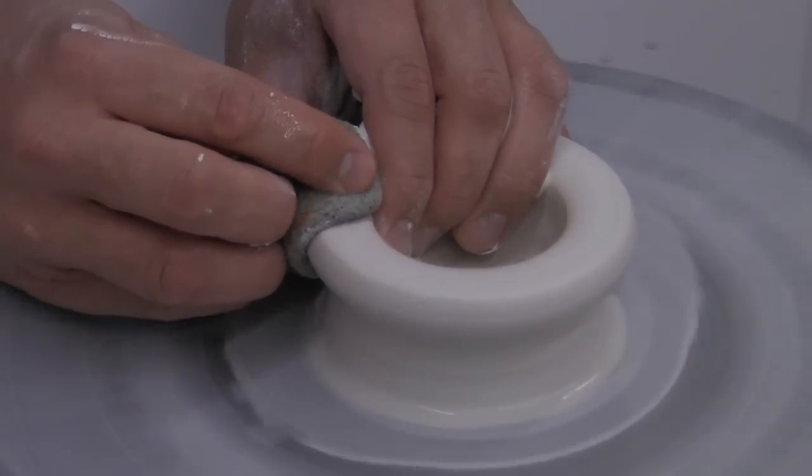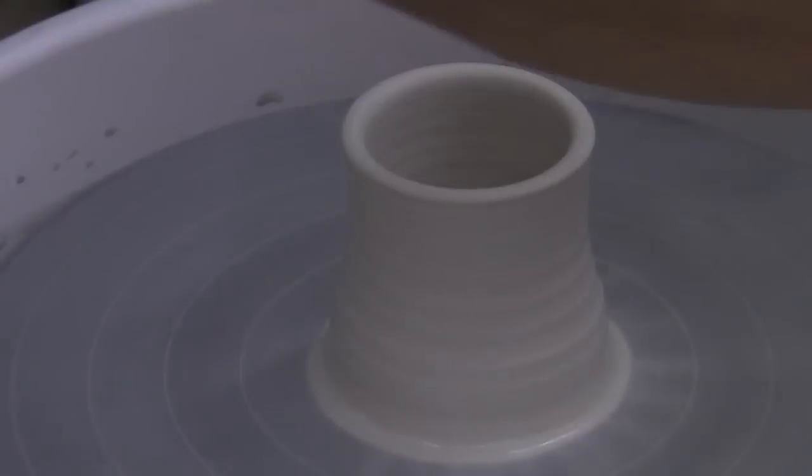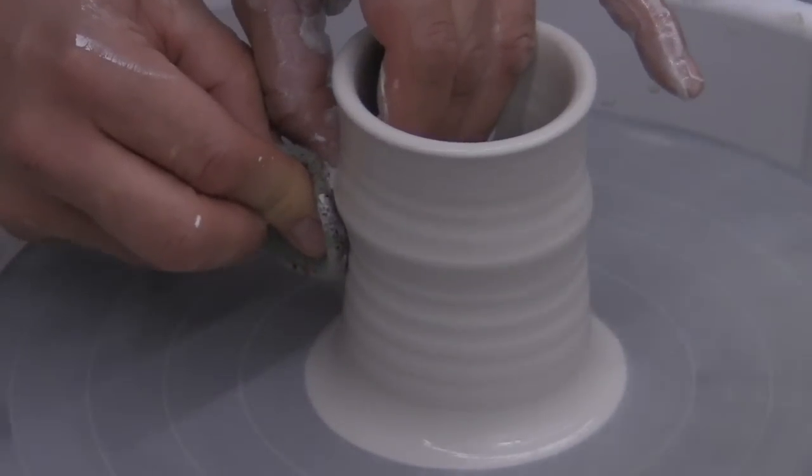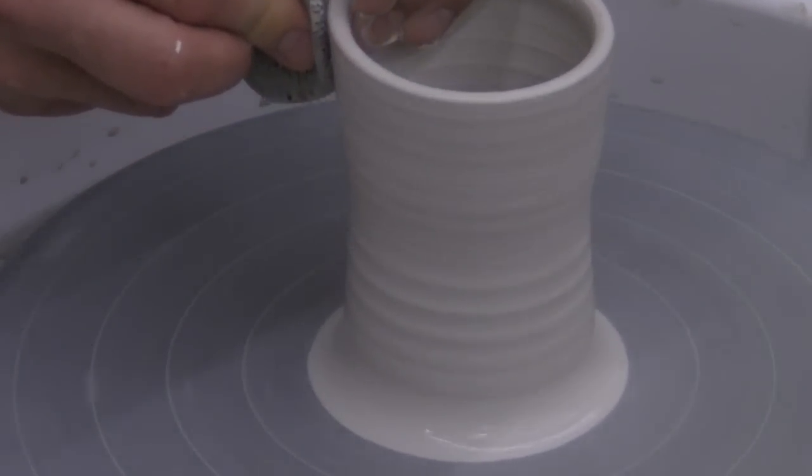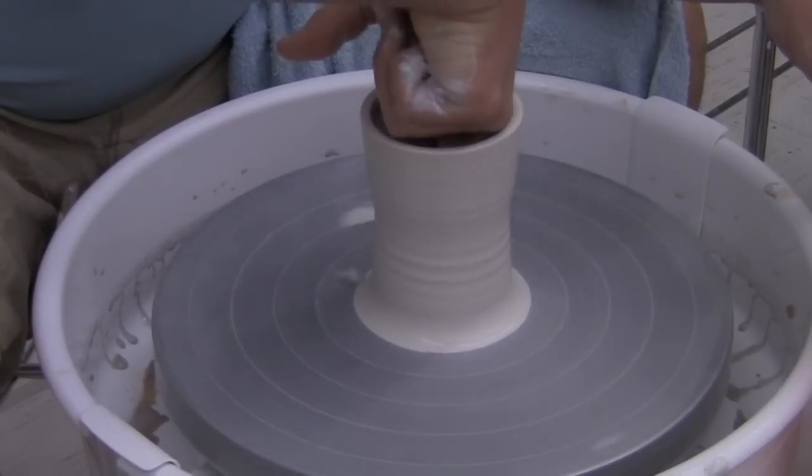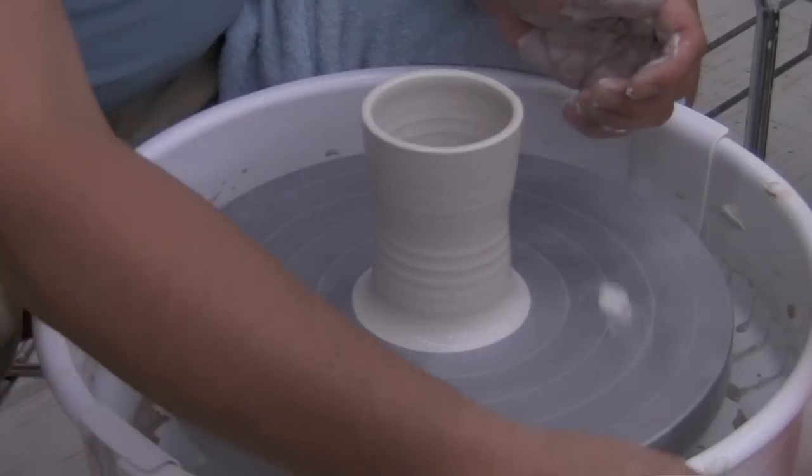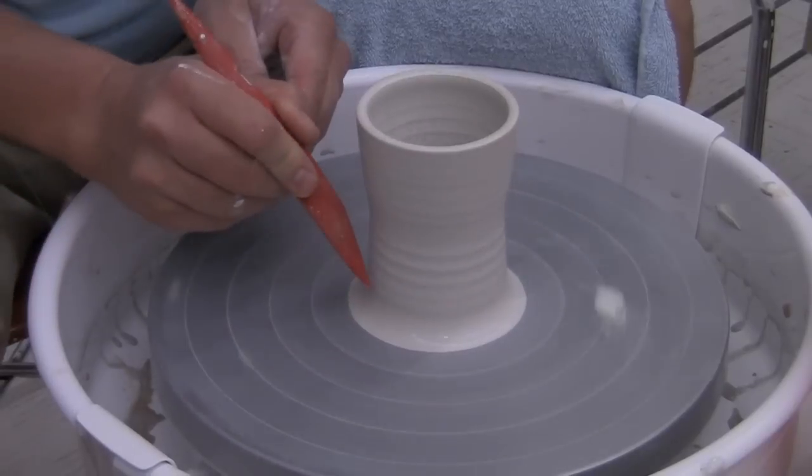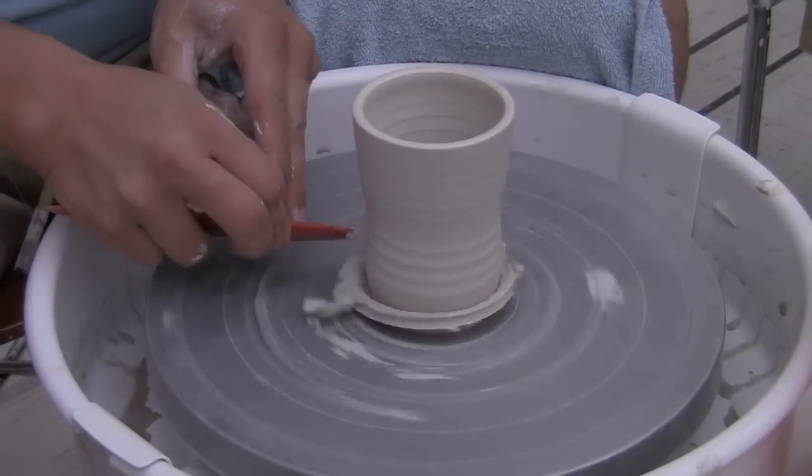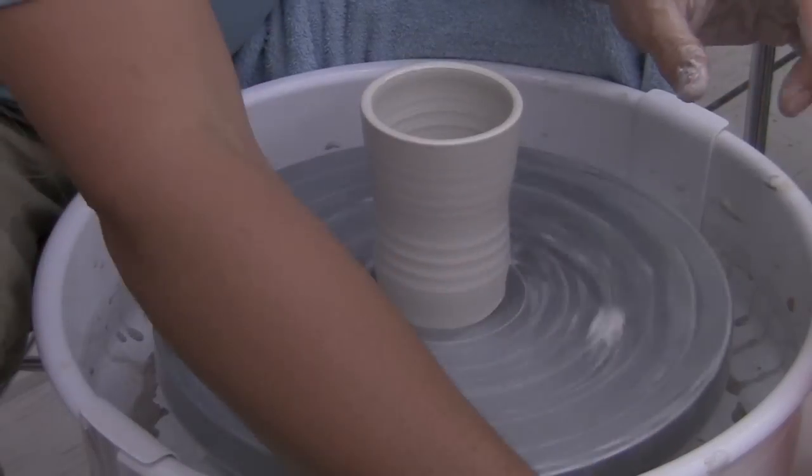This is based off of a straight cylinder but slightly flared out. There's a couple things to think about on cups. One is the rim and the form. I'm going to rib this, take off a little clay, and start shaping this. Use your potter's knife, take off that extra clay, and rib it.